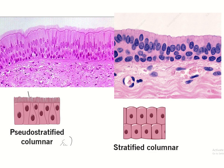In pseudostratified ciliated columnar epithelium, you see numerous nuclei at different levels in the basal region, giving a stratified look. However, cilia are present at the apical surface, and all ciliated cells confirm it is actually simple epithelium. This contrasts with true stratified columnar epithelium, where multiple layers are genuinely present.